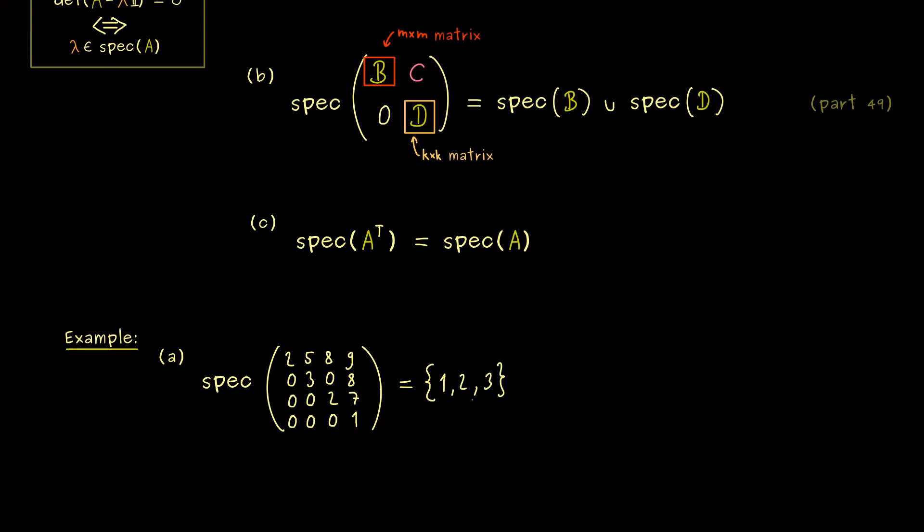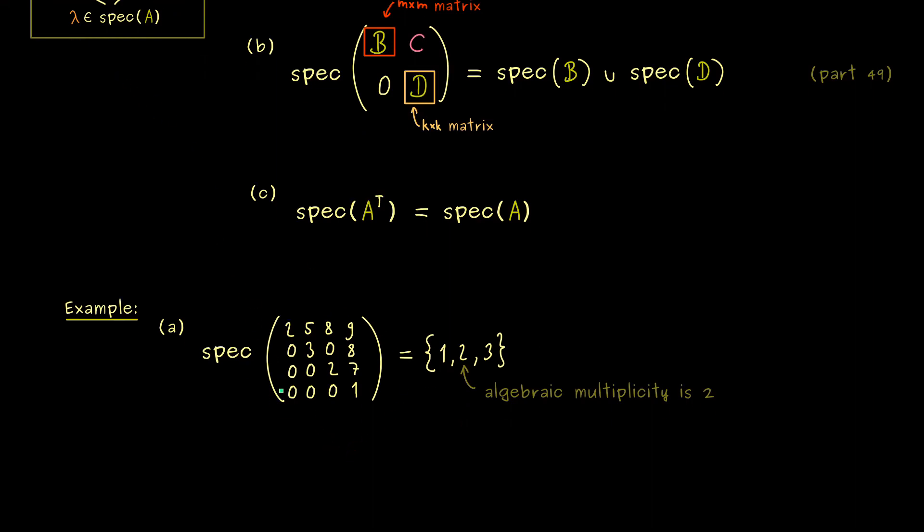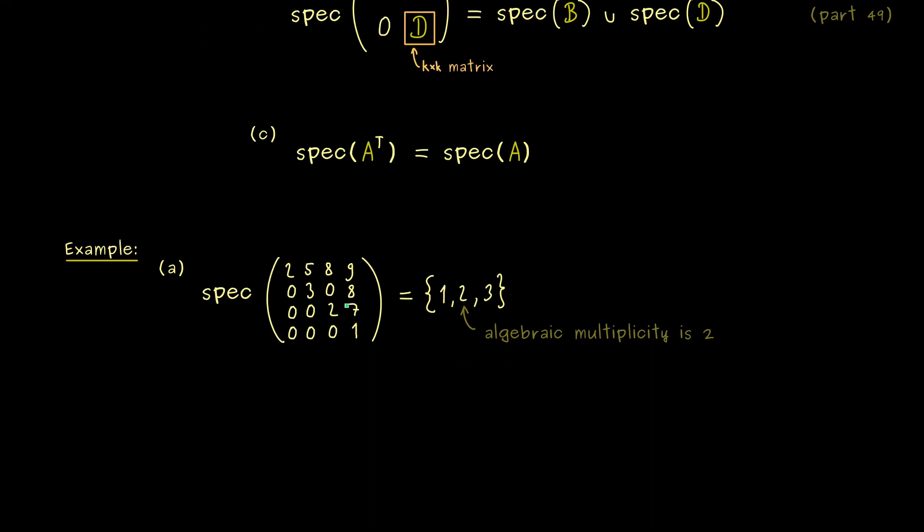However 2 occurs 2 times. Hence the algebraic multiplicity of 2 is also 2. And of course the algebraic multiplicity of the other ones is simply 1. So important to remember here is this is not hard to do because the characteristic polynomial immediately gives us this result. However please note this is only for the algebraic multiplicity. Because we don't know anything here about the geometric multiplicity.